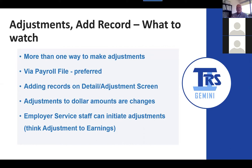The current process for adjustment to earnings — the ATE forms — will not go away anytime soon, because anything that has to be adjusted prior to Gemini go-live will still be done with those adjustment to earnings forms in the same process we use now. If an adjustment is needed for anything post-go-live with Gemini, it will be done in the way this video explains.